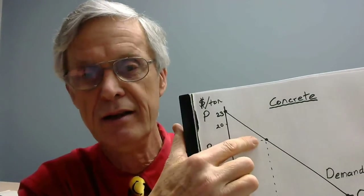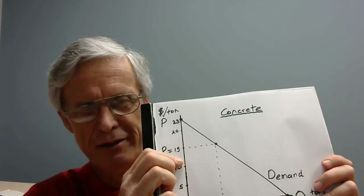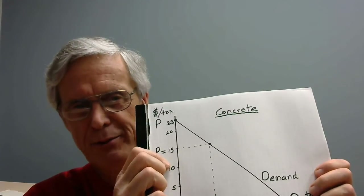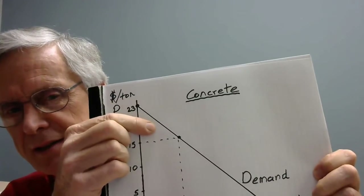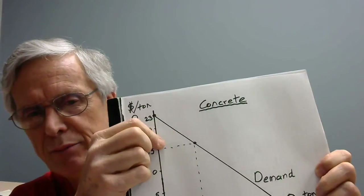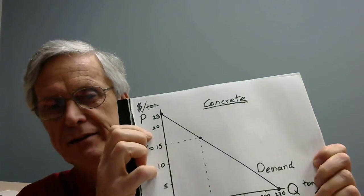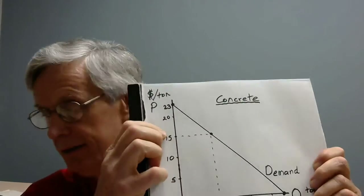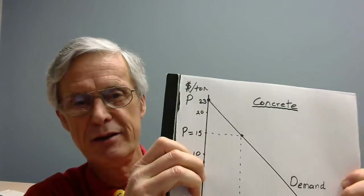The consumer surplus is demand minus price, up to the quantity purchased. That gives you a triangle — there's your first one, the consumer surplus triangle: the difference between the demand line and the price of $15, up to quantity 80. The dotted line over the price forms a triangle. One side of the triangle is 23 minus 15, which is 8. The other side is 80 long on the x-axis.